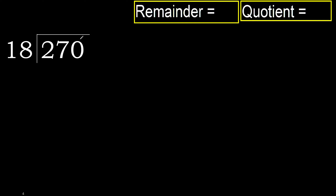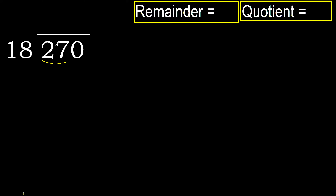270 divided by 18. 2 is less, therefore next. 27 is not less, therefore with 27 — 18 multiplied by which number is nearest to 27 but not greater?